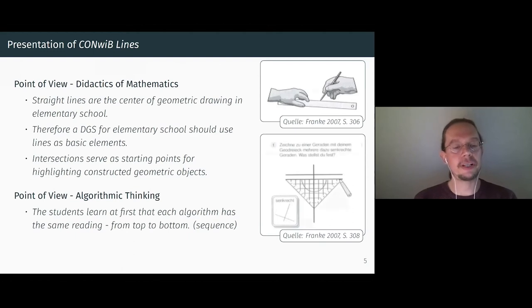Convip Lines is designed for elementary school. This means it is intended to give elementary school students access to dynamic geometry systems. In elementary school, constructions are mainly done as drawings. In Germany, the so-called GeoTriag is used to draw lines that are in a certain relation to each other to create geometric figures. In this way, the students draw triangles, as well as various rectangles, especially rectangles or squares. Since drawing lines is the main focus in elementary school, Convip Lines offers these lines as basic elements. They can be drawn as free lines and also as conditional lines. This means lines that have to be related to lines already drawn. With regard to algorithmic thinking, the application supports the achievement of an important reading in algorithms. This is that algorithms are read from top to down, from top to bottom.